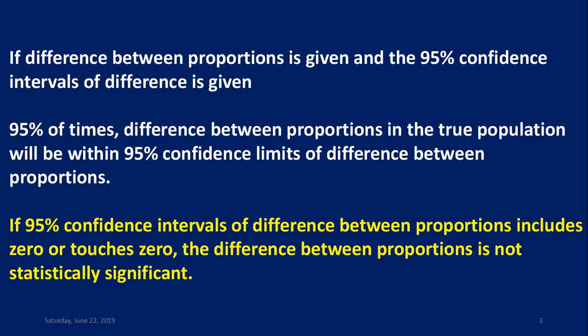If the difference between proportions and the 95% confidence intervals are given, then 95% of times the difference between proportions in the true population will be within those 95% confidence limits. If the 95% confidence interval includes 0 or touches 0, the difference between proportions is not statistically significant.